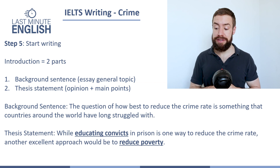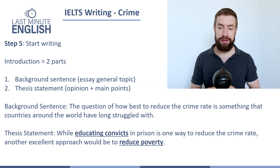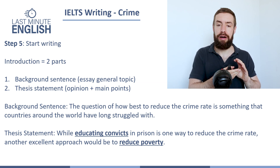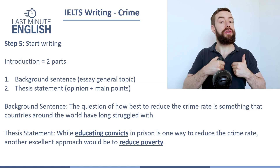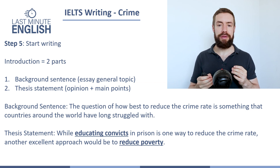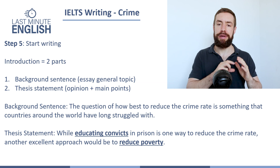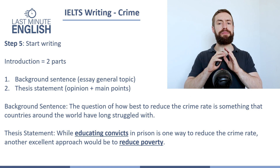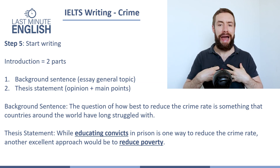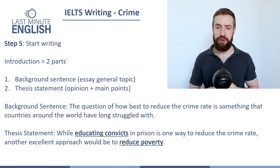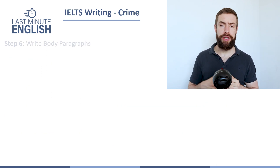They focus in with the thesis statement. Here it is: 'While educating convicts in prison is one way to reduce the crime rate, another excellent approach would be to reduce poverty.' We're giving our opinion — yes, educating convicts can help, but it's not the only way. As the examiner reads this, they immediately know the structure: first body paragraph on educating criminals, second body paragraph on reducing poverty. It makes it really clear, and as an examiner reading this, I feel like this is going to be a pretty good essay.